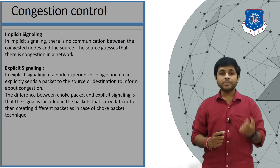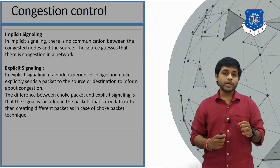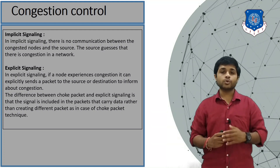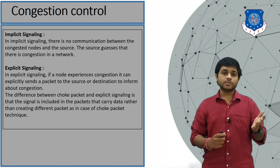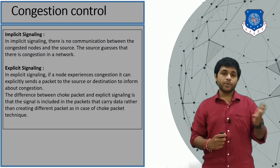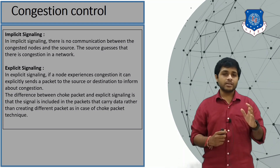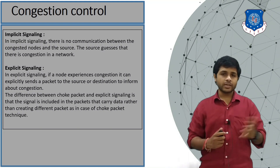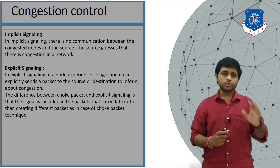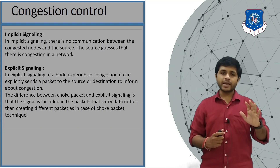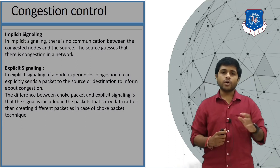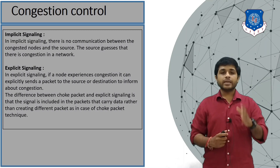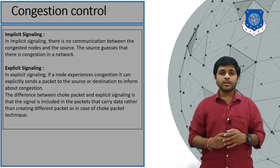The next type is implicit signaling. In implicit signaling, there is no communication between the congested node and the source. The source assumes there might be congestion in the network — perhaps because acknowledgements are delayed — and will send packets at a very low rate or wait some time before sending.